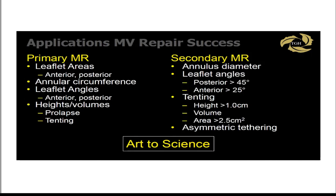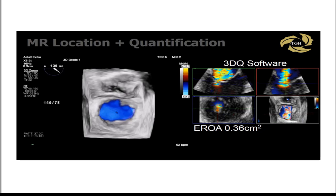3D modeling helps predict valve repair success by examining quantitative factors like leaflet areas, annular circumference, angles, height, and volumes. This will penetrate clinical practice more as surgeons at referral centers start requesting these numbers. For secondary mitral regurgitation, it can predict repair failure — identifying cases that shouldn't be repaired. The goal is to move from the art of mitral valve repair to the science of mitral valve repair.